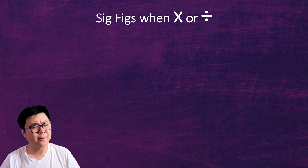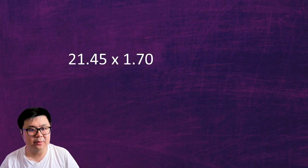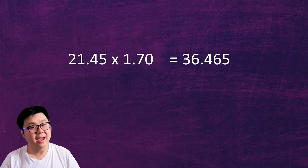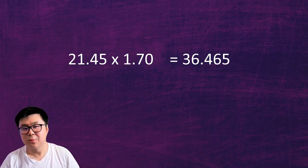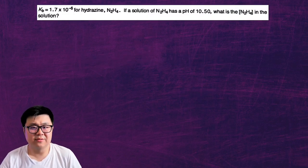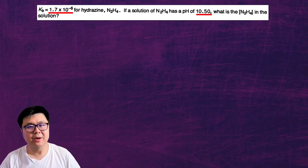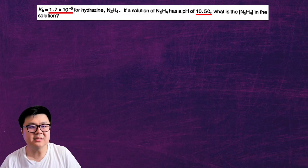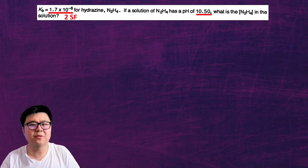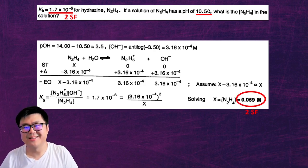When we multiply or divide — which is going to be way more common than adding or subtracting in physics or chemistry — we always keep the lowest sig figs out of the numbers we're multiplying or dividing. For example, 21.45 times 1.70 gives us 36.465. The 21.45 has four sig figs and the 1.70 has three sig figs, which means we round our answer to three sig figs, giving us 36.5. The easiest approach is to scan the question for the numbers given, find the one with the lowest sig figs — here 1.7 times 10 to the power of negative six has two sig figs — then at the very end, round your answer to two sig figs.